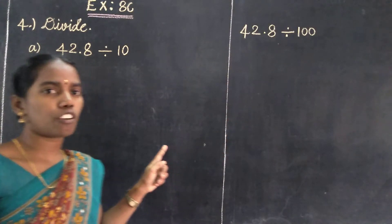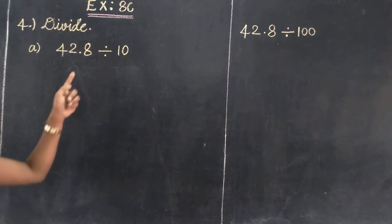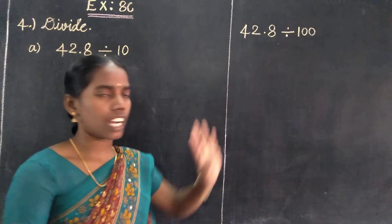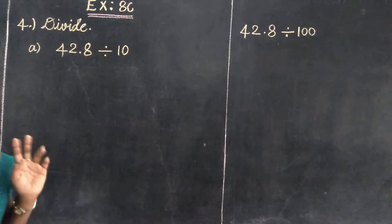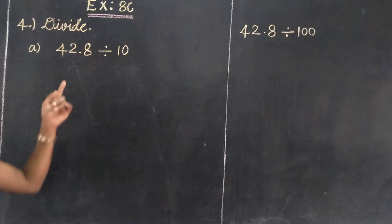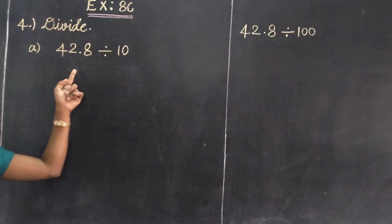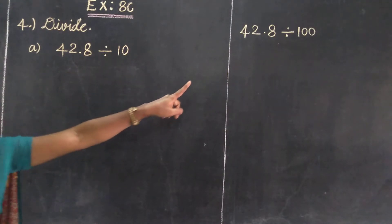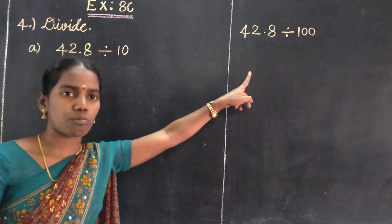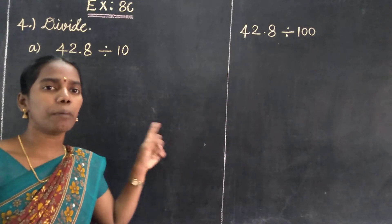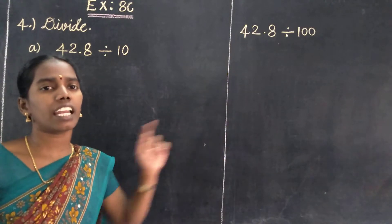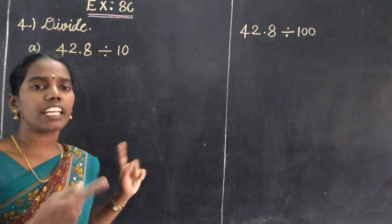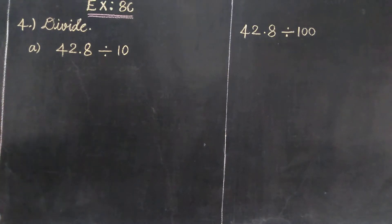The divisions are: first one, 42.8 divided by 10; second one, 42.8 divided by 100. It is a 1 decimal number. We need to find the answers — they are given in different circles, find out what number.